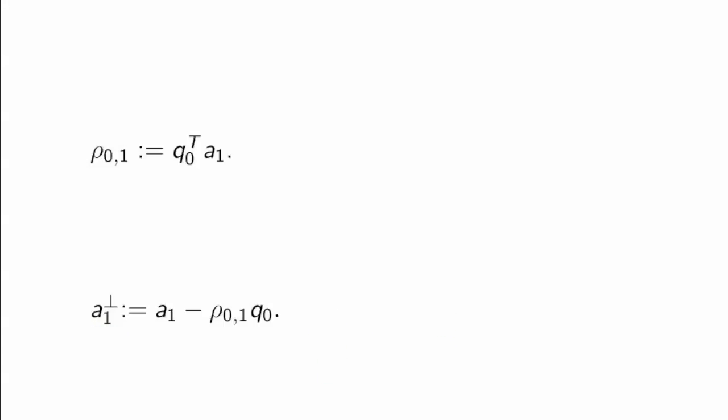It will become convenient later on to do this in two steps. The first is to compute the inner product of q0 with A1. And the second one is then to subtract off that multiple of q0 from A1 to compute A1 perp.